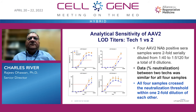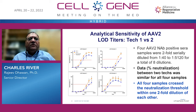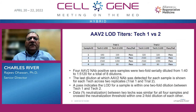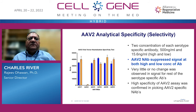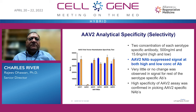To compare analytical sensitivity of AAV2 LOD titers between two technicians, we diluted four samples starting from 1:40 to 1:5,120 with a total of eight dilutions. The pattern of the curve looks similar, and all four samples crossed the neutralization threshold within one two-fold dilution of each other, as shown in the table — they were within two-fold of each other. For specificity of AAV2, two different dilutions of serospecific antibodies were used — 500 ng/mL and 15.6 ng/mL. AAV2 suppressed signal at both high and low concentrations, whereas there was no change with the other serotypes, confirming AAV2-specific detection of AAV2 neutralizing antibodies.